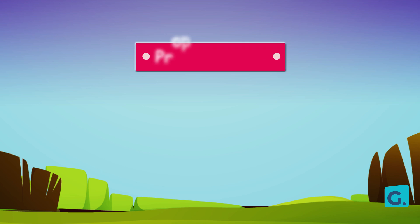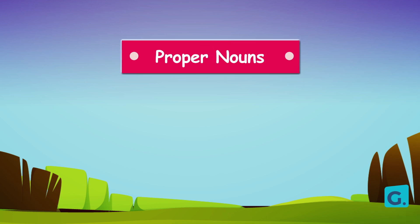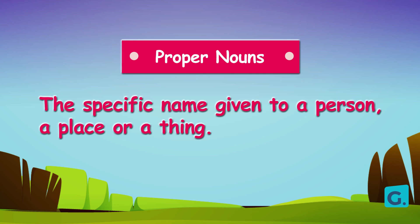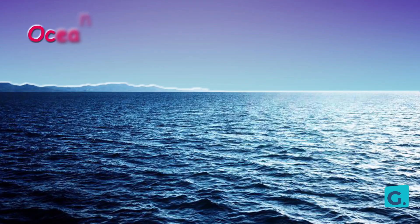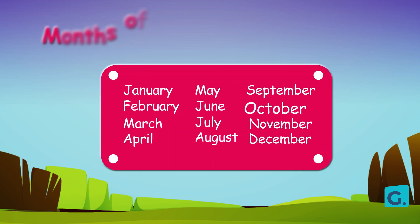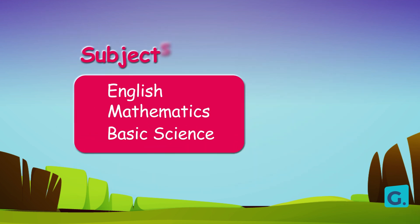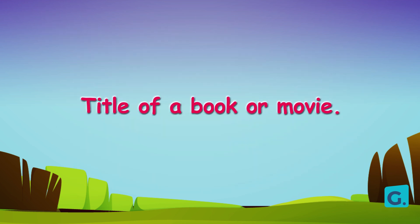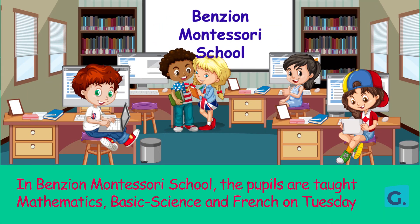Now let's look at another type of noun, which is proper noun. A proper noun is the specific name given to a person, place or thing, like mountains, oceans, days of the week, months of the year, subject titles, or a book or movie. The proper noun always starts with a capital letter.